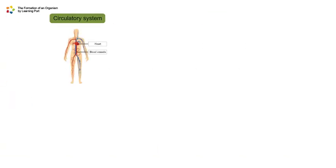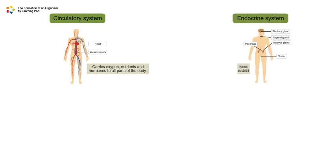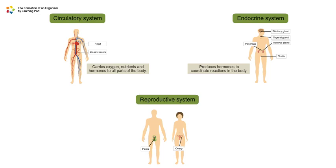The circulatory system carries oxygen, nutrients, and hormones to all parts of the body. The endocrine system produces hormones to coordinate reactions in the body. The reproductive system produces reproductive cells. The testis produces sperms and the ovary produces ovum.